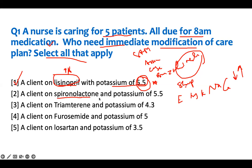A client on spironolactone with a potassium of 5.5 — same thing. Spironolactone is potassium-sparing; it will increase potassium. At 5.5, it will go up, so we have to see this patient. A client on triamterene with a potassium of 4.3 — triamterene is also potassium-sparing. Potassium of 4.3 is okay; we don't need to intervene right now. It will go up eventually, but it hasn't reached a dangerously high level yet.